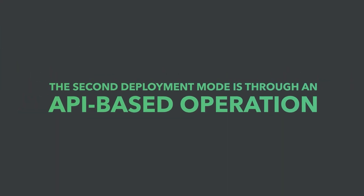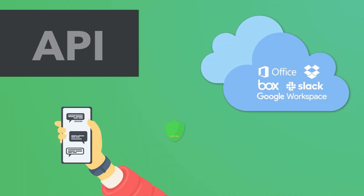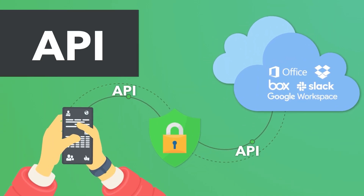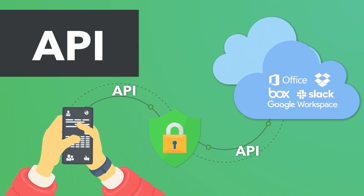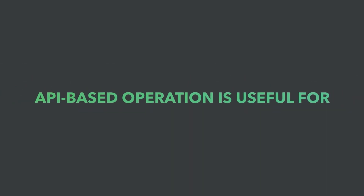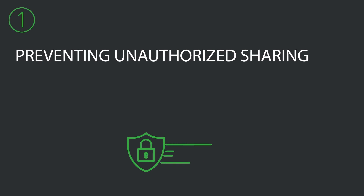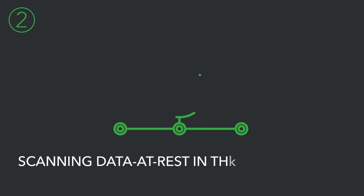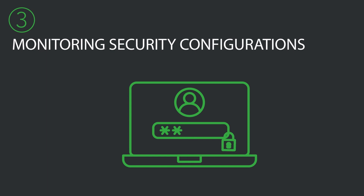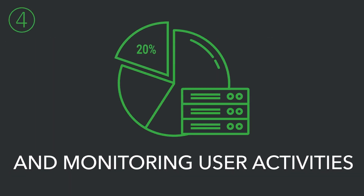The second deployment mode is through an API-based operation. The CASB interfaces with an API supplied by the cloud app to provide desired security capabilities. API-based operation is useful for preventing unauthorized sharing, scanning data at rest in the cloud service, monitoring security configurations, and monitoring user activities.